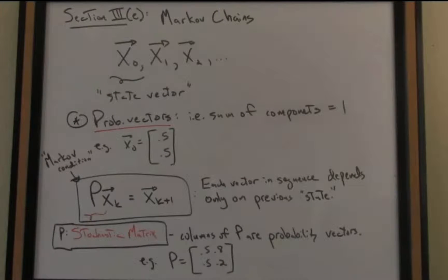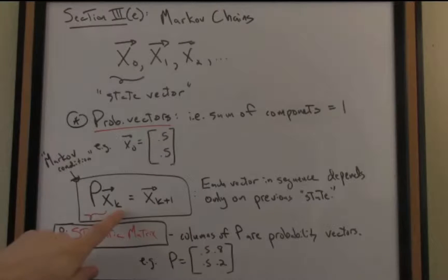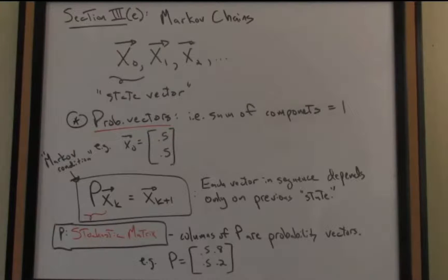How, then, do we define this transition from state to state in our Markov chain? Well, that's established through something called the Markov condition. So what we're going to do is at state time, let's say, k, we have our vector x sub k.